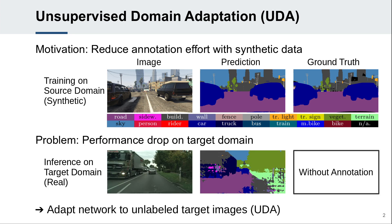However, a model trained on the source domain typically experiences a performance drop when applied to the target domain. The goal of unsupervised domain adaptation, or short UDA, is to increase the performance on the target domain by using unlabeled target images.